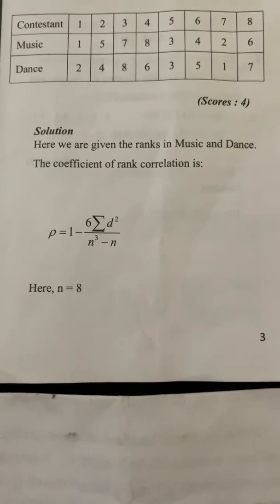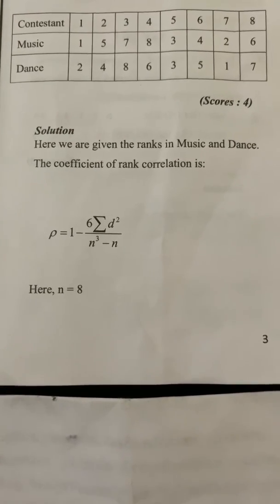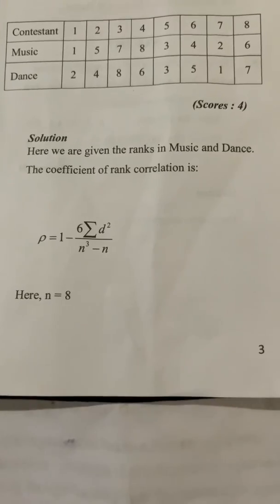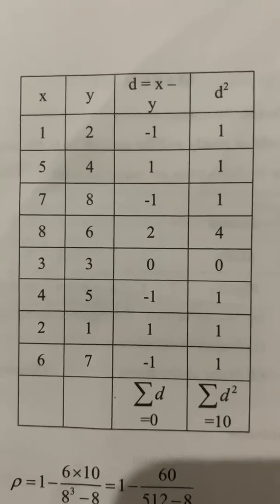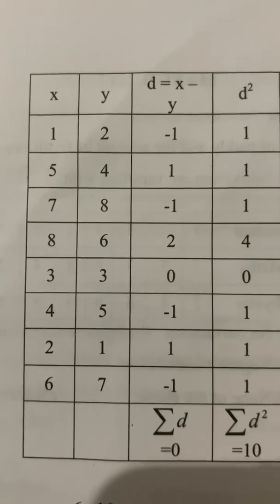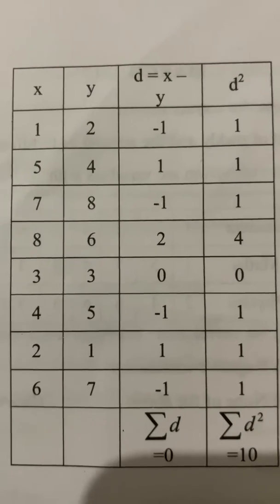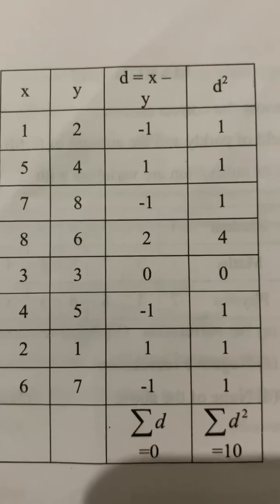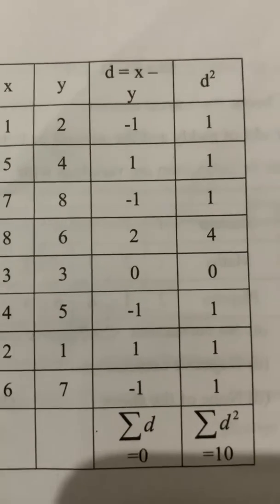Here n is equal to 8. D is equal to rank of x minus rank of y. We compute d for each participant — negative differences remain negative and positive remain positive — and then calculate d-squared for each.